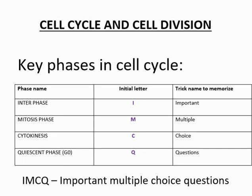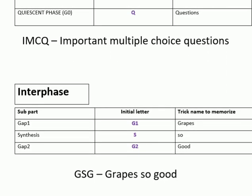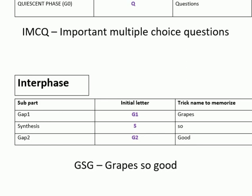In the mnemonic: I stands for interphase, M for mitosis phase, C for cytokinesis, and Q for the quiescent phase. Now, in interphase there are three sub-stages: Gap 1, Synthesis phase, and Gap 2 phase. From the initial letters of these sub-stages, the trick is 'Grapes' — G, S, G.